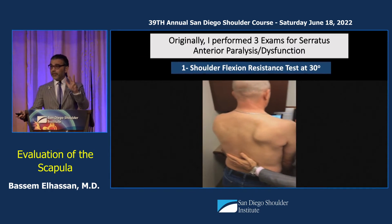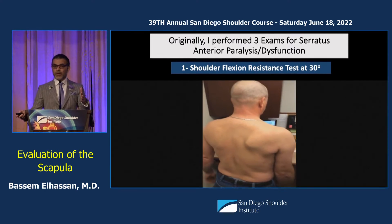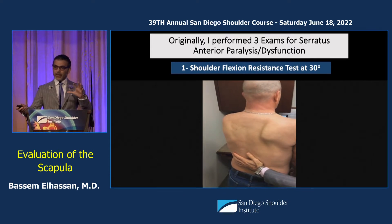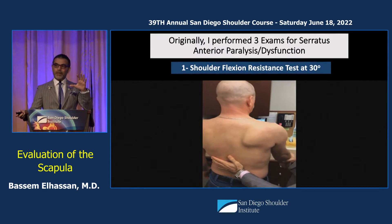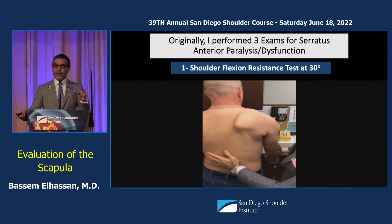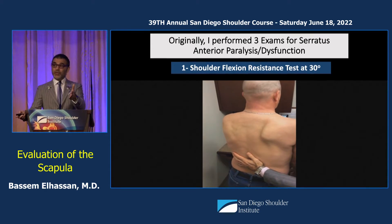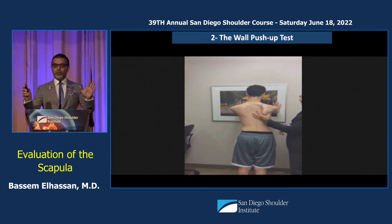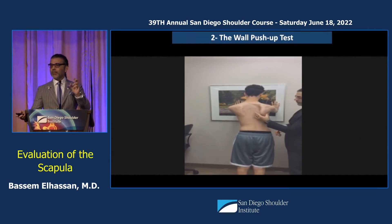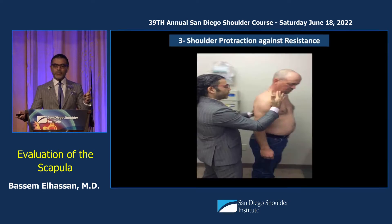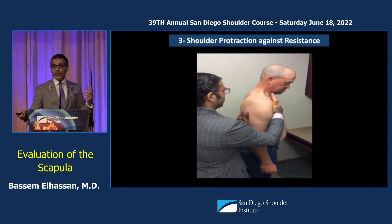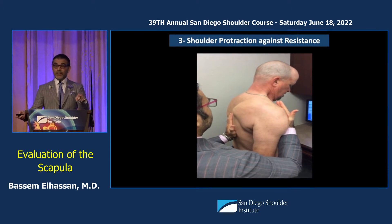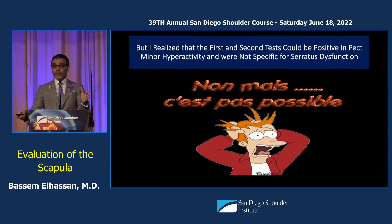With serratus paralysis, there are three exams I used to rely on, but I was mistaken about two of them. Number one: flexion at 30 degrees wings the scapula off the chest for serratus paralysis, but it can also mimic pectoralis minor — so this is not an excellent test. The wall push-up test: I don't do it anymore; I used to think winging on wall push-up meant serratus paralysis — that was wrong as well. The third — protraction against resistance, where the scapula wings off your hand — this is a good one.